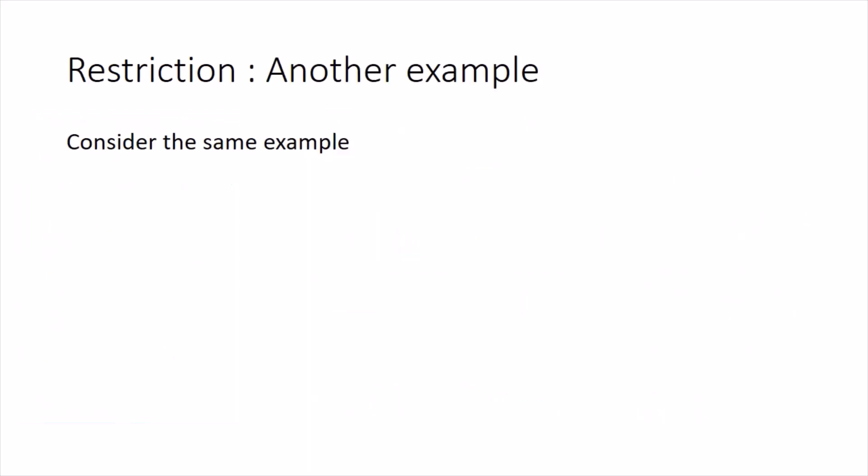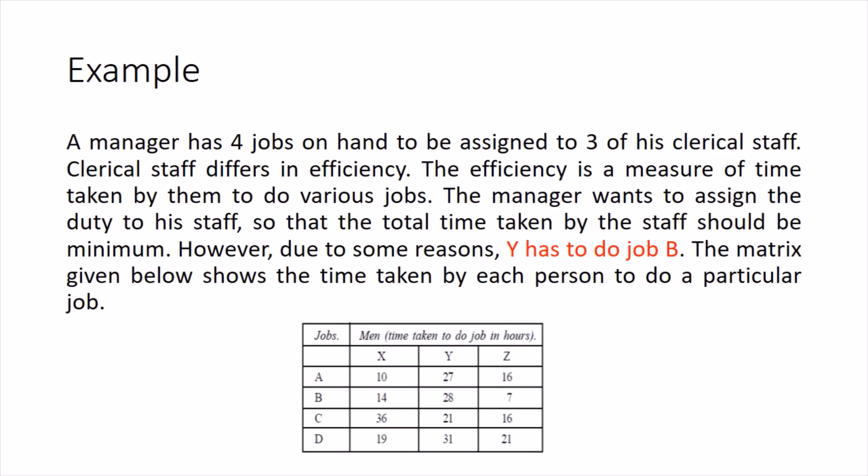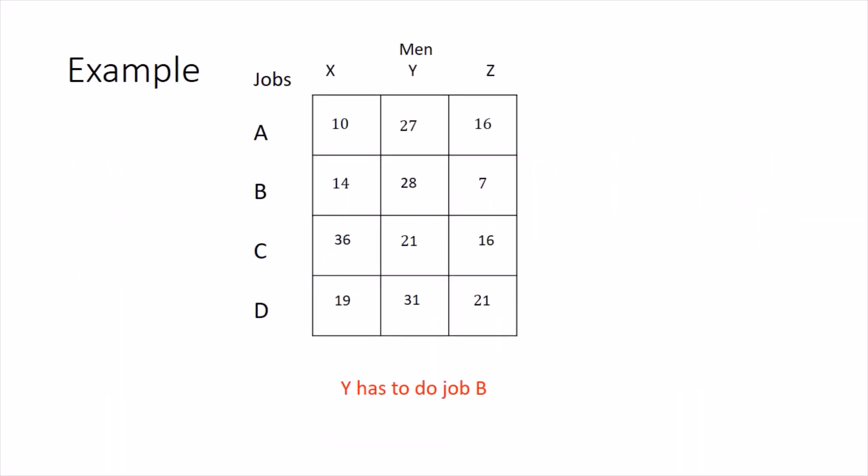That was the first kind of restriction. Now let's talk about the second kind of restriction using the same example, but with a changed restriction. This time the restriction is: Y has to do job B. This is exactly opposite to the first type — previously a person could not do a particular job; now a person must do a particular job.